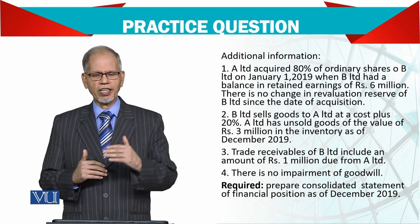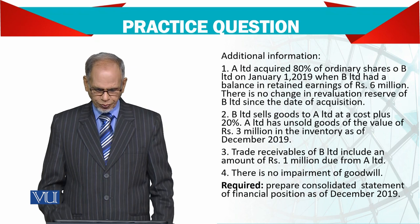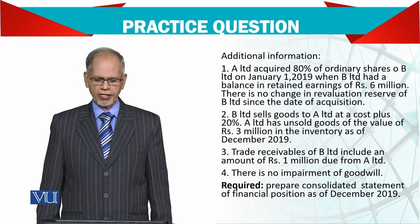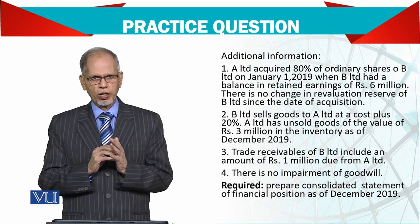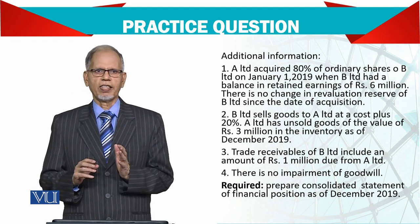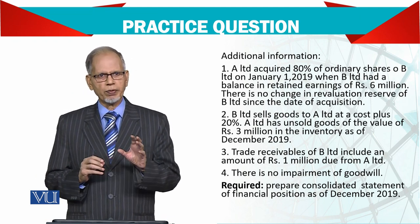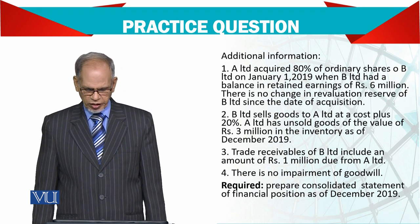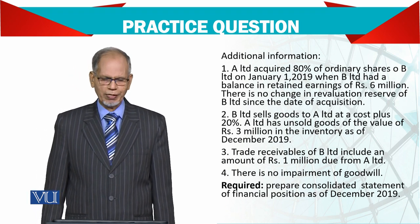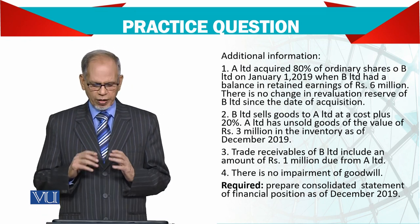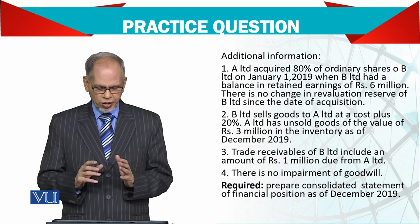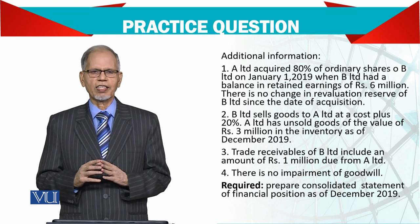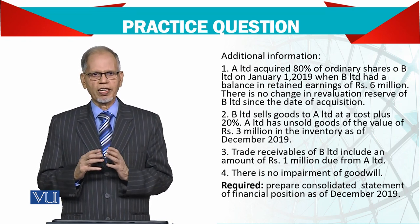Pre-acquisition profit is used in the goodwill calculation but is not included in your profit. B Limited sells goods to A Limited at cost plus 20% — so if cost is 100, you add 20 and sell at 120. So if sales are 120, the profit is 20. A Limited has unsold goods of 3 million in inventory as of December 2019. This closing stock of 3 million is not the cost — it is the sale price. We need to find how much profit is included, and this is called unrealized profit requiring adjustment.